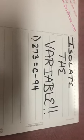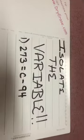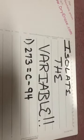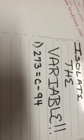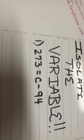So our focus for today is once again, as you're going to see, isolate the variable. Today we're going to be working specifically with subtraction equations. So I look at this first example, 273 equals c minus 94.